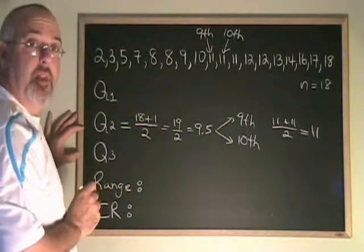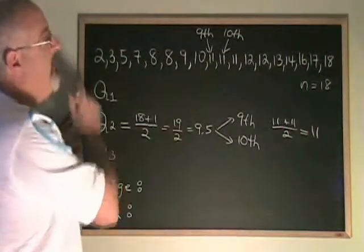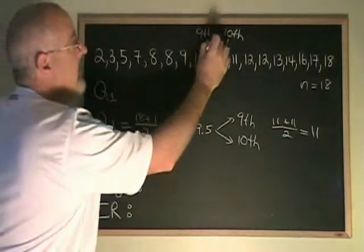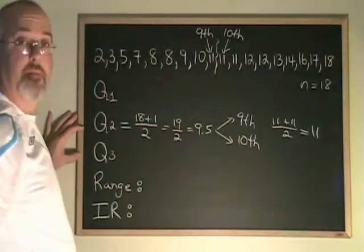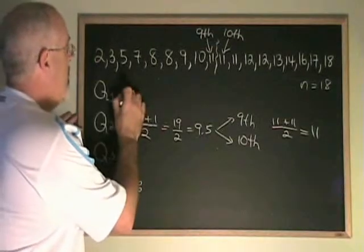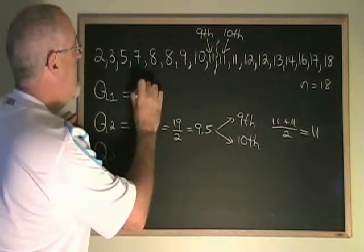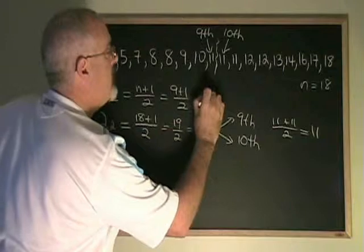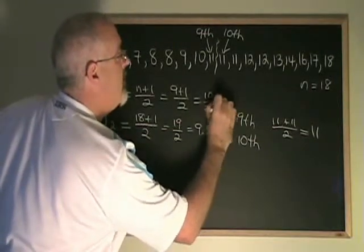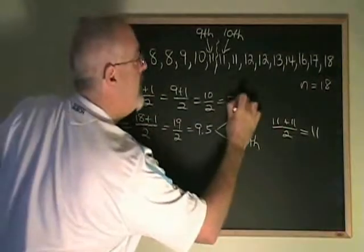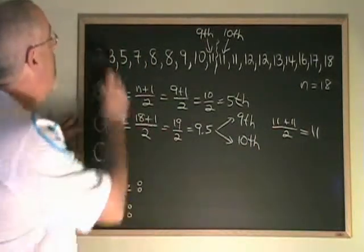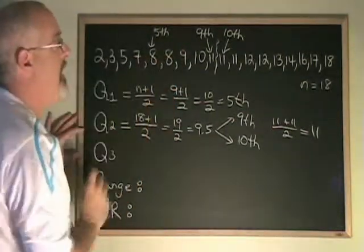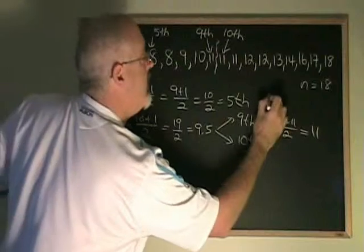Our Q1, we have to know how many data values are left of our median. And I see that there are 9 to the left of the median, which is right here. Our n plus 1 over 2 formula gives us 9 plus 1 over 2, which gives us 10 over 2, 5. The 5th data value is going to be our Q1. Counting through the data, our 5th data value is here. It's this 8. So our Q1 is 8.